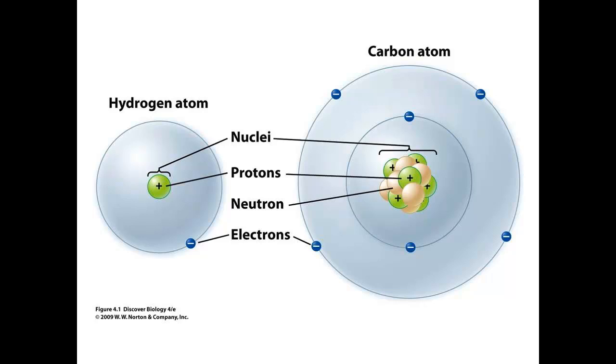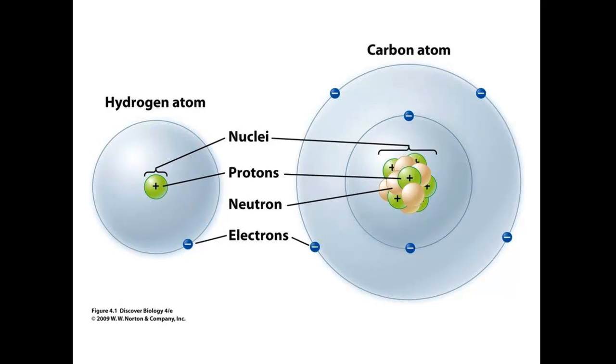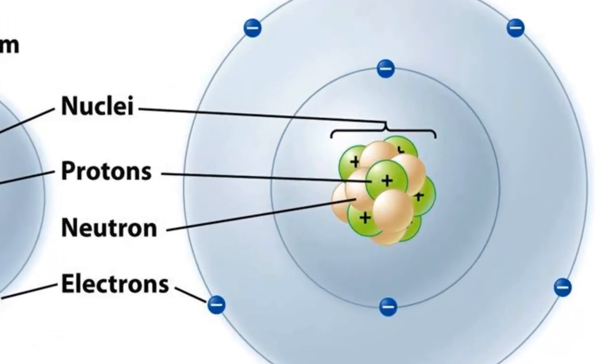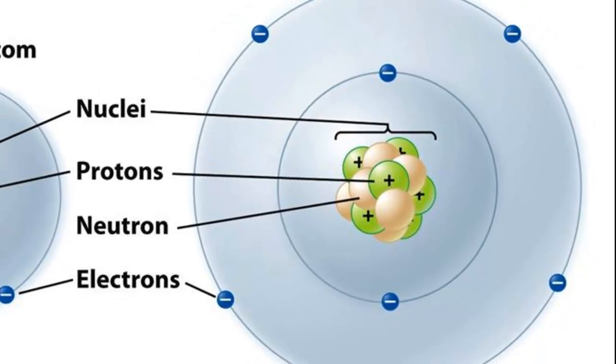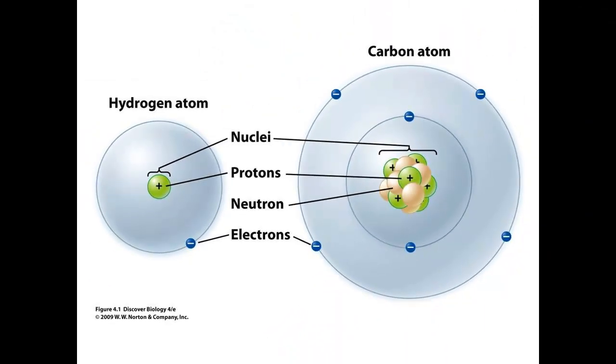Different elements have atoms with different numbers of subatomic particles. When we look at the organization of an atom, the protons and neutrons are found together in a dense central cluster known as the nucleus. The word nucleus means center or core. The electrons are not found in the nucleus of the atom, but instead are found moving rapidly around the nucleus in shells.